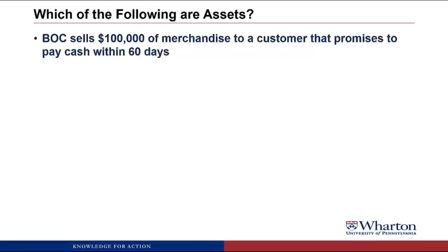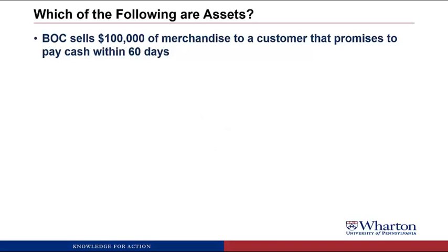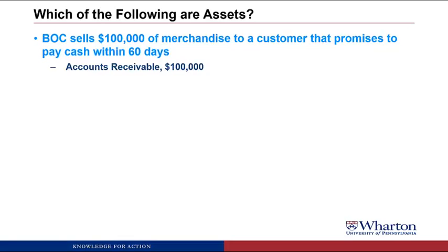BOC sells $100,000 of merchandise to a customer that promises to pay cash within 60 days. This one will be an asset. We acquired this asset through a transaction — delivering goods to a customer. We can measure the value of the future benefits because it's how much cash the customer owes us according to the invoice. This asset is called accounts receivable. Anytime customers owe us money based on delivering them goods, we call that accounts receivable. The value is $100,000.